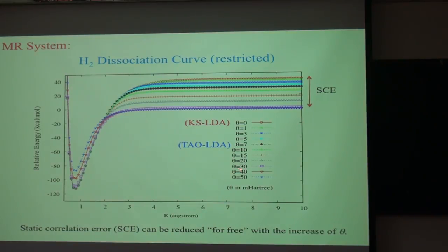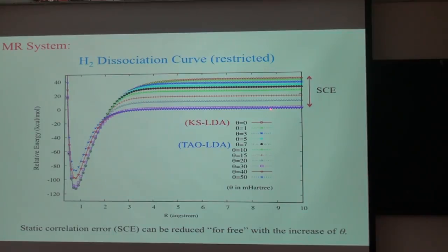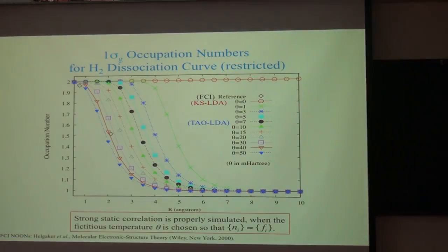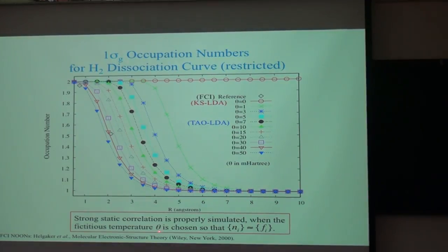As you can see, with the temperature C_dot in the range of 30 to 50 milli-Hartree, the static correlation error is vanishingly small. This is supported by our conjecture that strong static correlation can be properly simulated when the fictitious temperature is sufficient, so that natural orbital occupations are approximately described by the occupation numbers from tau DFT.